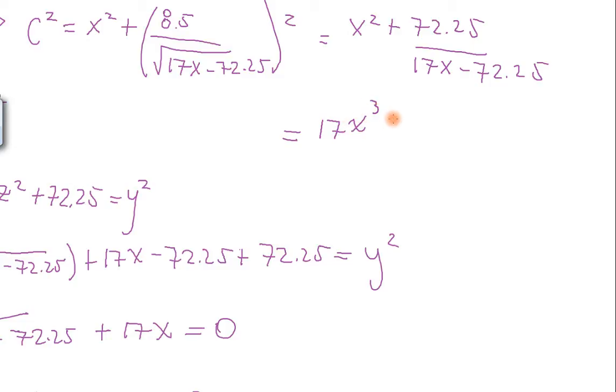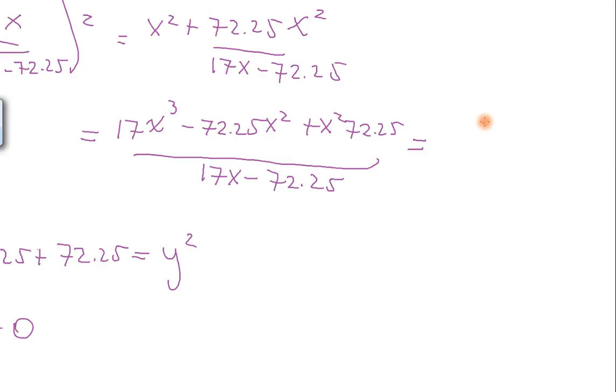Minus, I think I left, oh, yep, I left this X. So this X goes here, so this is going to be X squared. So minus 17X, and I left something else. Oh, sorry. Minus 72.25X squared plus 72.25 divided by 17X minus 72.25. Which is equal to what? Well, these two cancel, so I have 17X cubed divided by 17X minus 72.25.